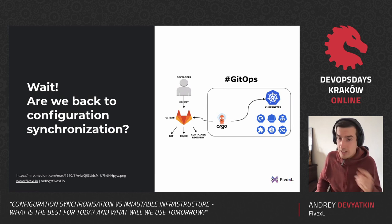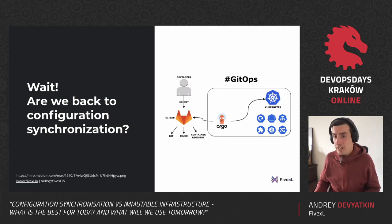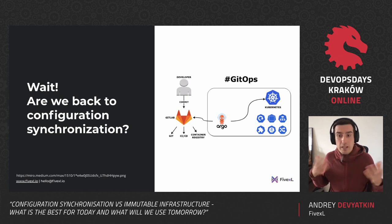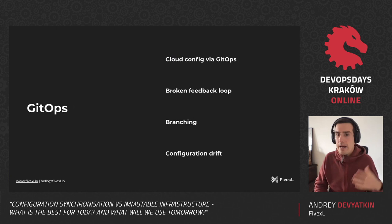You might notice that we're actually doing configuration synchronization today in Kubernetes — it's called GitOps. It's pretty much the new Chef: you have a repository that defines what you need to have in the Kubernetes cluster, and then you synchronize that to the cluster. So again, we're doing configuration synchronization. We can now ask: is this what we should be doing? GitOps has a number of problems.